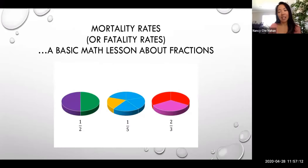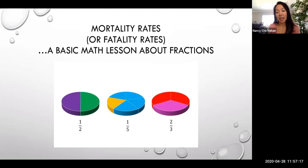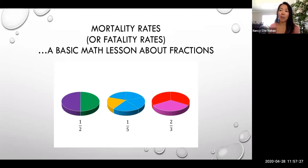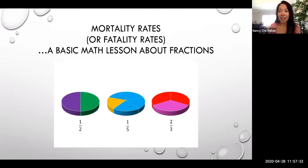So when we talk about mortality or fatality rates, which is one of the big numbers that is thrown out there every single day, I think there's a lot of misconceptions or confusion about what these numbers mean. And therefore, interpretations and opinions are coming out of confusion. So here in this lesson, I want to give a basic math lesson, first of all, about what fractions are, because that's what rates are.